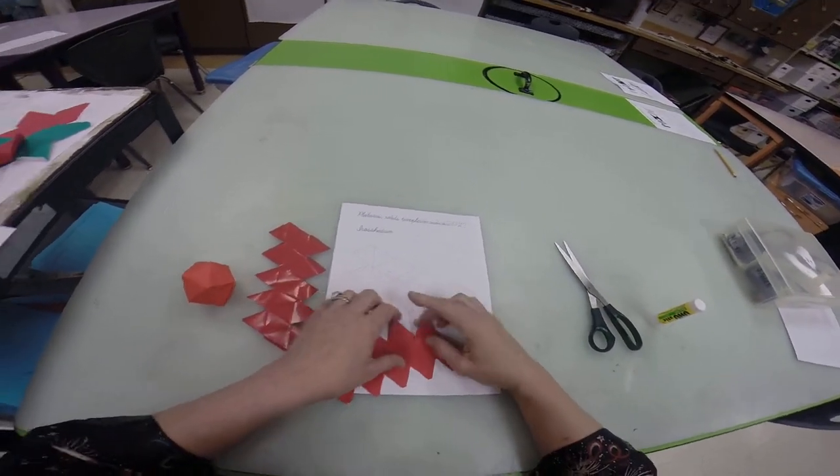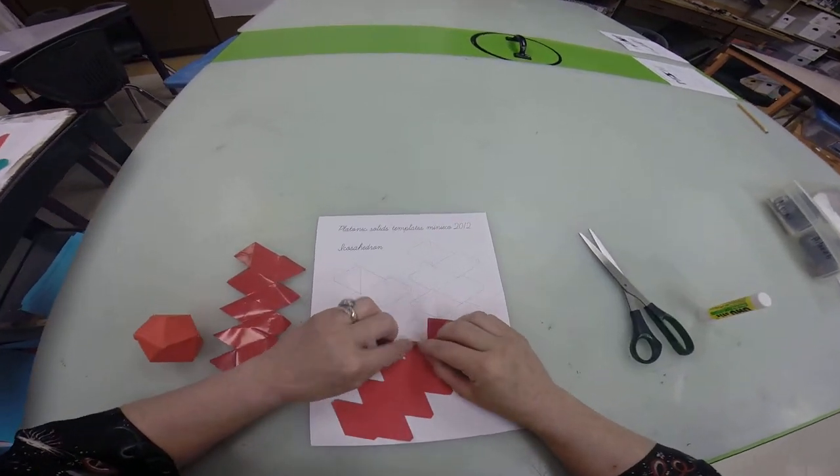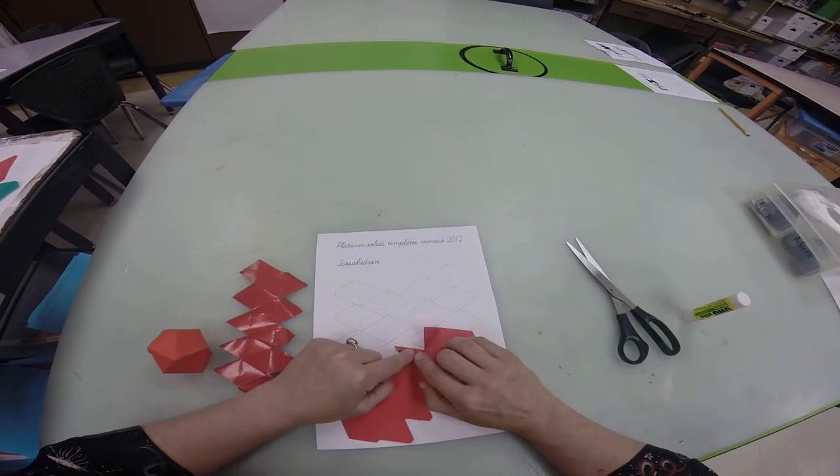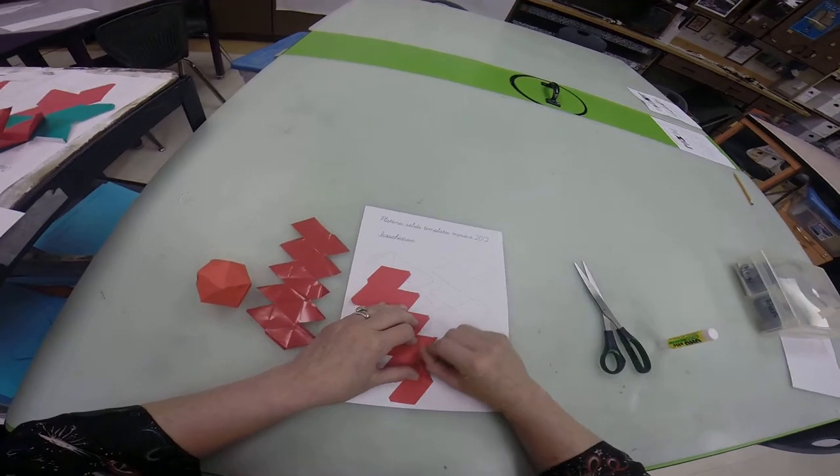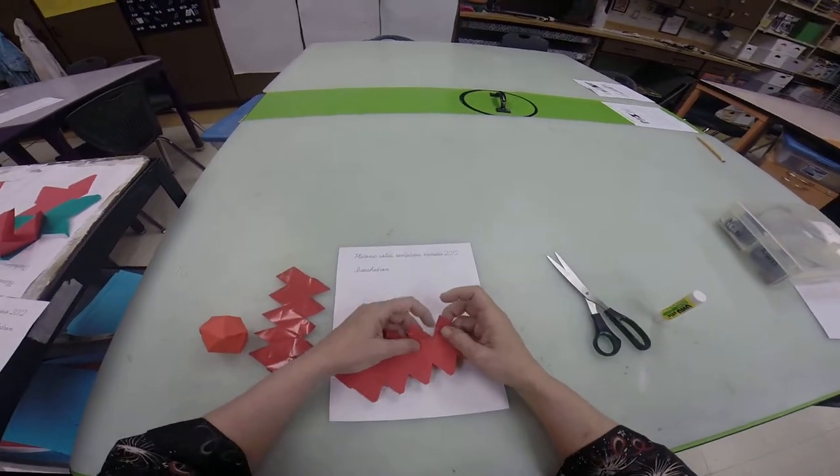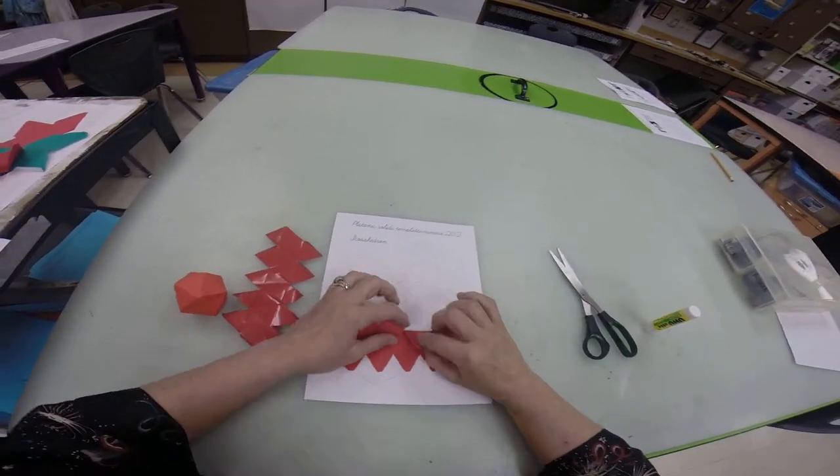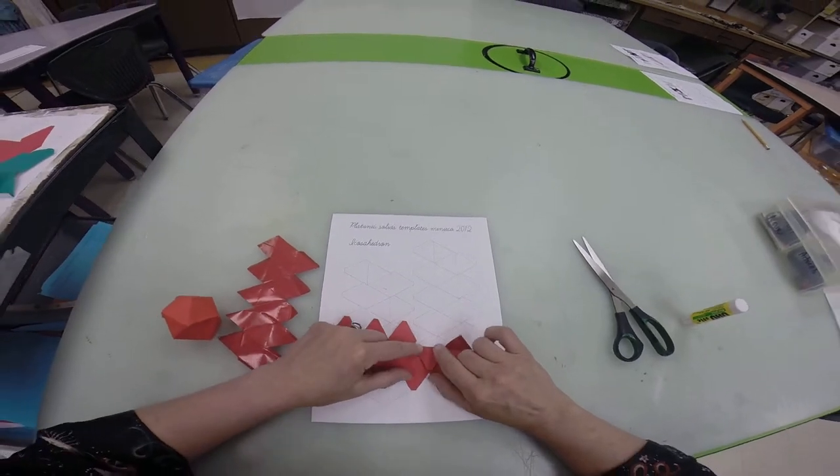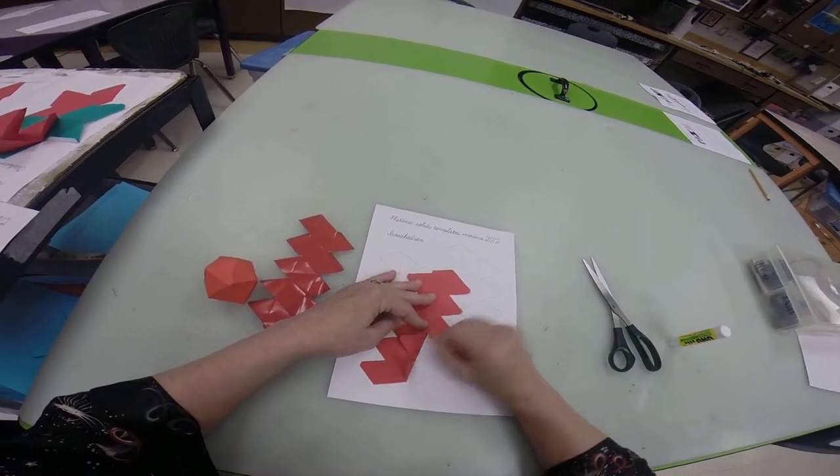Now this is a tribe activity. You're working as a tribe. So if one person is really good at cutting out but they don't like to put them together, they can cut a whole bunch up. If one person is really good at folding but they don't like cutting and they don't like putting it together, then they can just fold them. You can do an assembly line if you'd like.